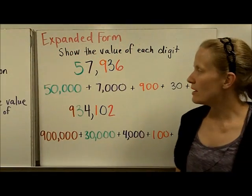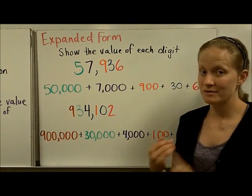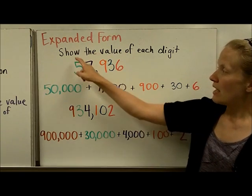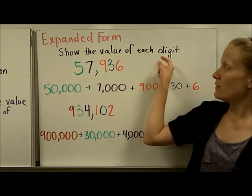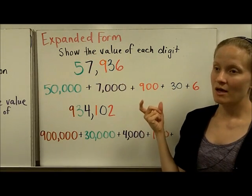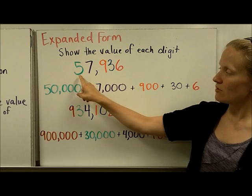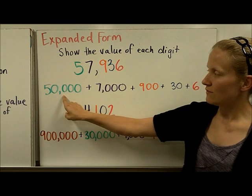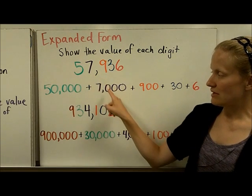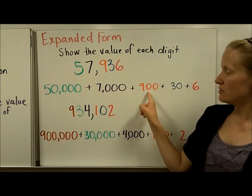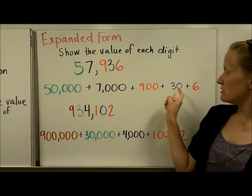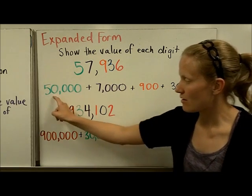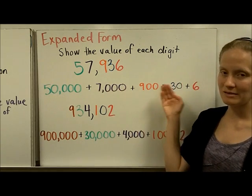And finally, one more way to write numbers. So we had standard form, word form. One last way to write numbers is expanded form. And in expanded form, you show the value of each digit and you add them together like an addition problem. So this number, 57,936—we're going to write the value of the 5, which is 50,000, the value of the 7 is 7,000, the value of the 9 is 900, the value of the 3 is 30, and the value of the 6 is 6, 6 ones. And this is written in expanded form, so just as an addition problem.